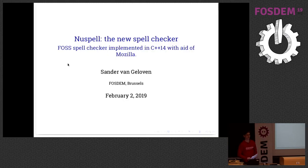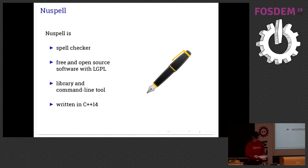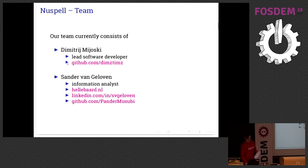Hello everybody here and on the interwebs. My name is Sander van Gelooven and I'm going to talk to you about NuSpel. NuSpel is a spell checker — it's a FOSS project, of course. It consists of a library and a command line tool and it's solely written in C++. The team currently consists of Dimitri and me, and we worked the main part of 2018 on creating this new spell checker.